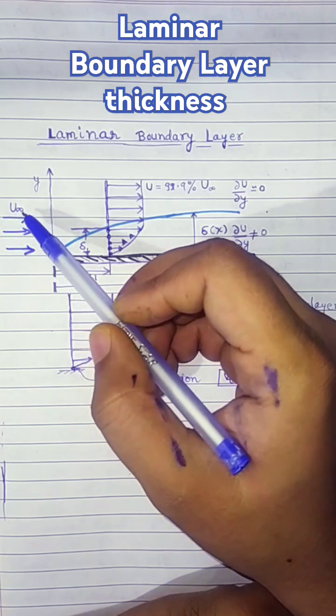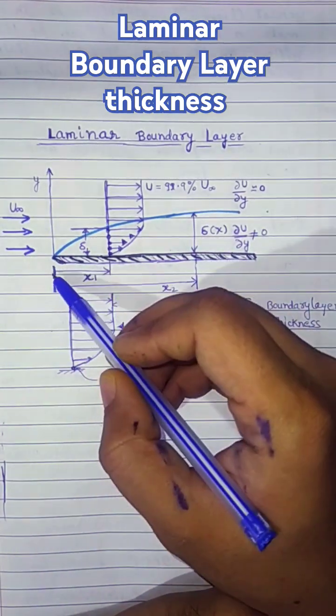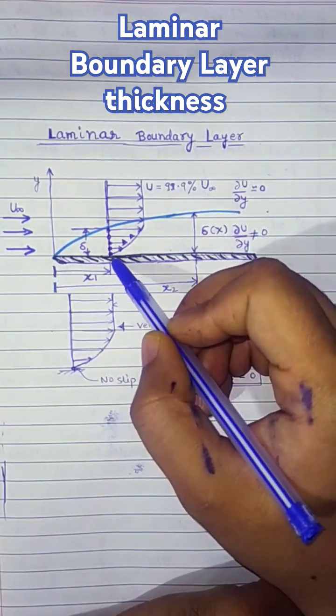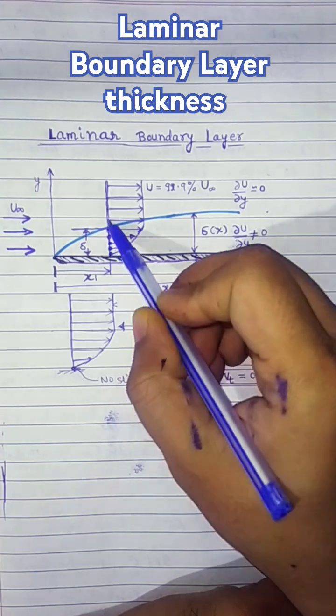Let's assume there is a uniform flow with velocity u-infinity coming from the left. Now we will look at the flow and the fluid particle velocities as they are moving away from the wall.